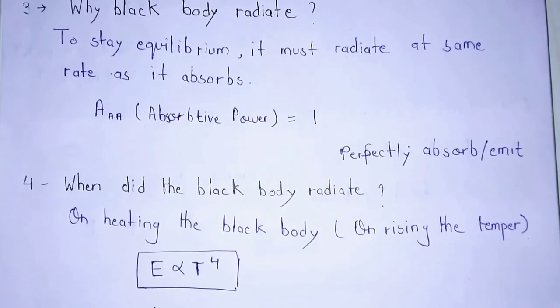Next question. When did the black body radiate? The answer is on heating the black body or increasing the temperature. That can be proved from Stefan's law also. E is directly proportional to the absolute temperature to the power 4.